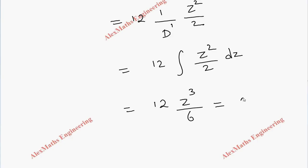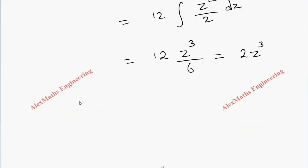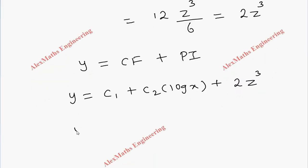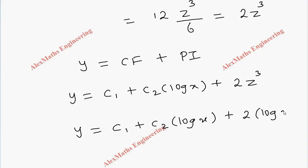The complete solution is CF plus PI. CF is c1 + c2·log x, and PI is 2z³. Since z = log x, the final solution is: y = c1 + c2·log x + 2(log x)³.